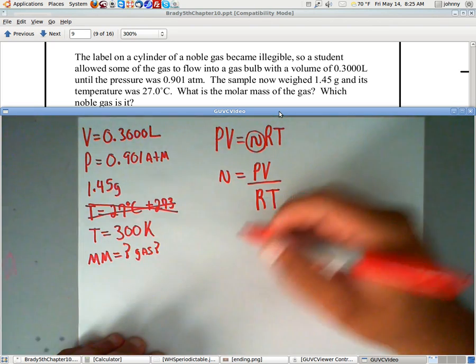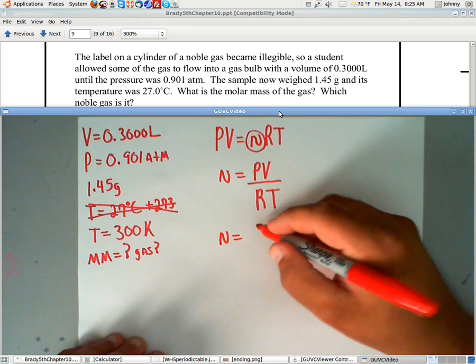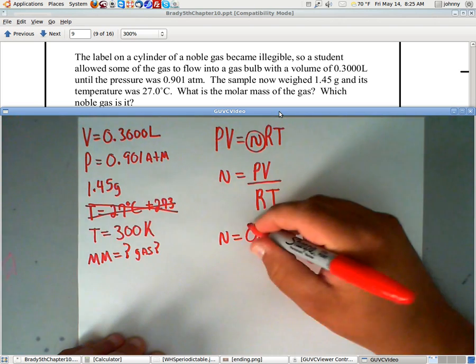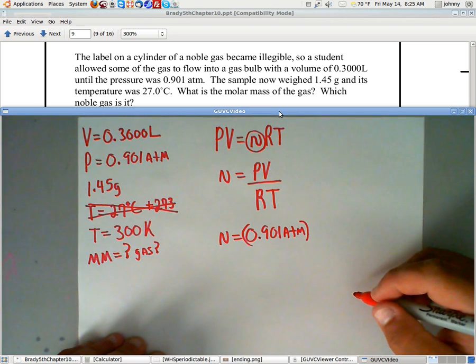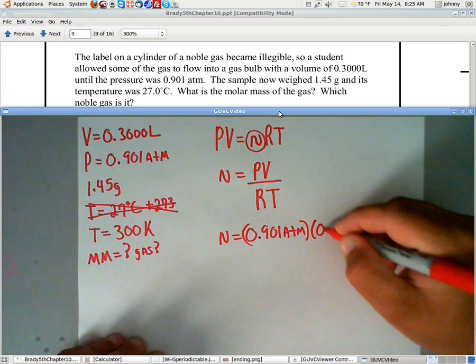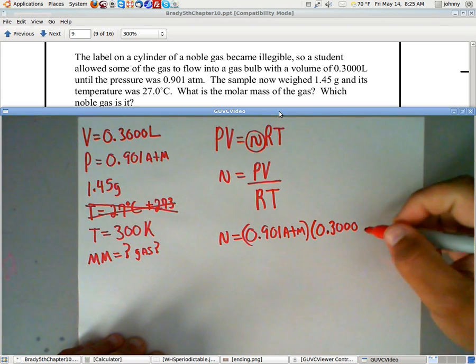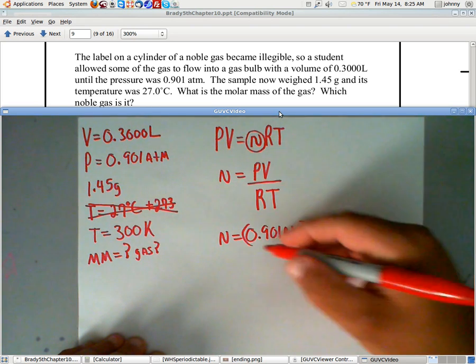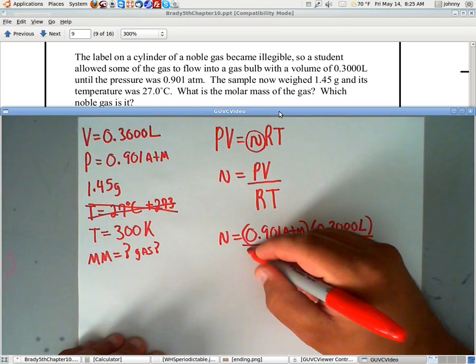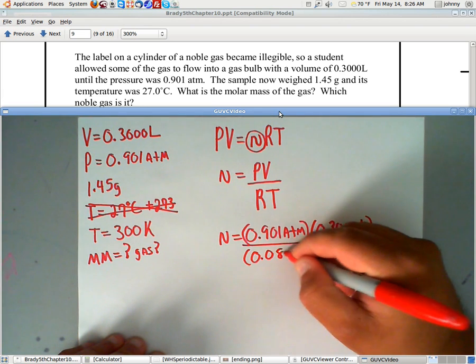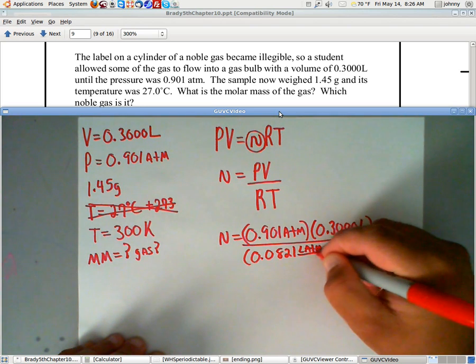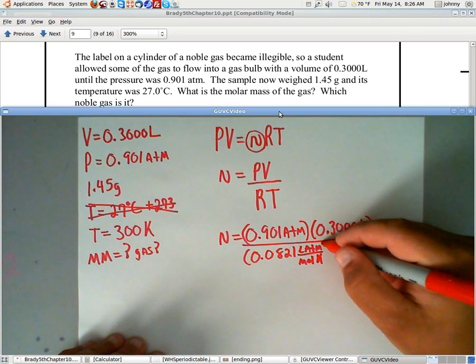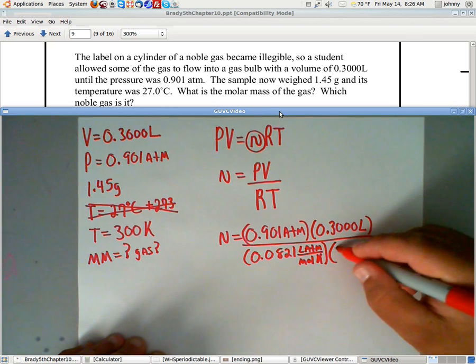Now, let's plug and chug here. N equals, what was the pressure? The pressure was 0.901 atmosphere. The volume was 0.3000 liters. The gas constant value is 0.0821 LATM over MOLK. Now, that's liters times atmospheres. Moles times Kelvin, so there's MOLK. And my temperature is 300 degrees Kelvin.